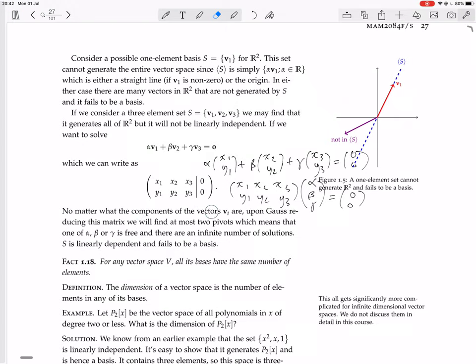No matter what the components of the vectors Vi are, so no matter what the Xi and Yi are, upon Gaussian reducing this matrix, we will find at most two pivots, right? Because you can only get one pivot per row, and there's only two rows. So we'll find at most two pivots, which means that one of the variables is free, because there's three variables, right?